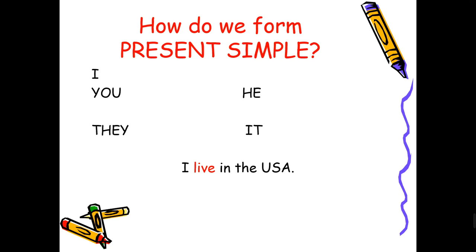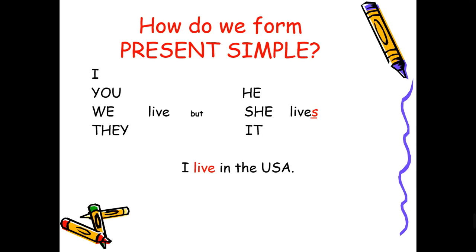Now, how do we form the present simple? Any sentence starts with the subject, which could be the pronouns. With I, you, we, and they, we use just the verb — like 'I live,' 'you eat,' 'we swim,' 'they go,' and so on. But with he, she, and it, we use the verb plus s, ies, or es according to the ending of the verb. For example, 'I live in the USA' — we don't add anything because the subject is I. 'She studies architecture' — we add s to the verb, but since it ends in y, we change it to ies.